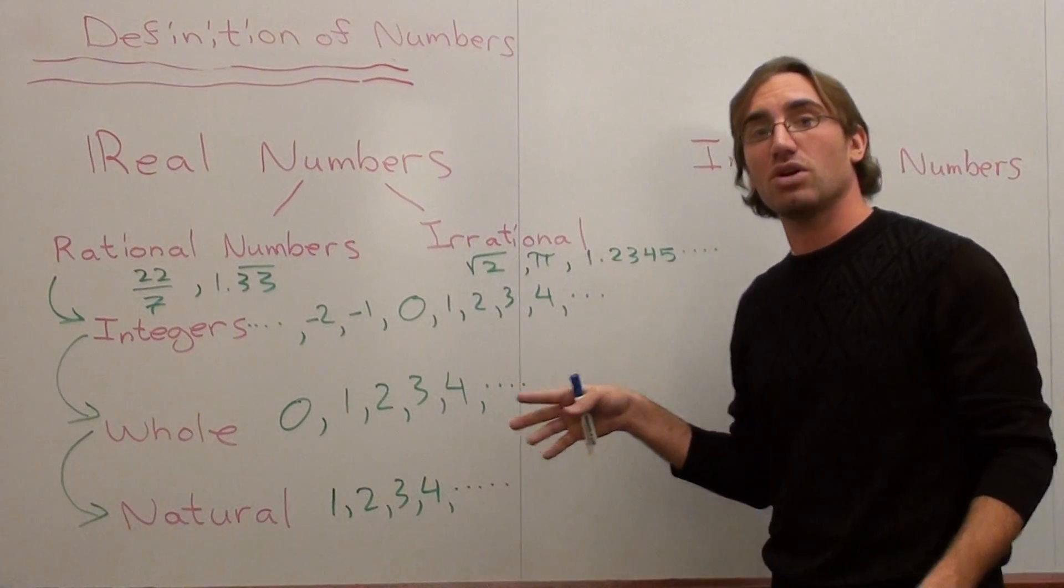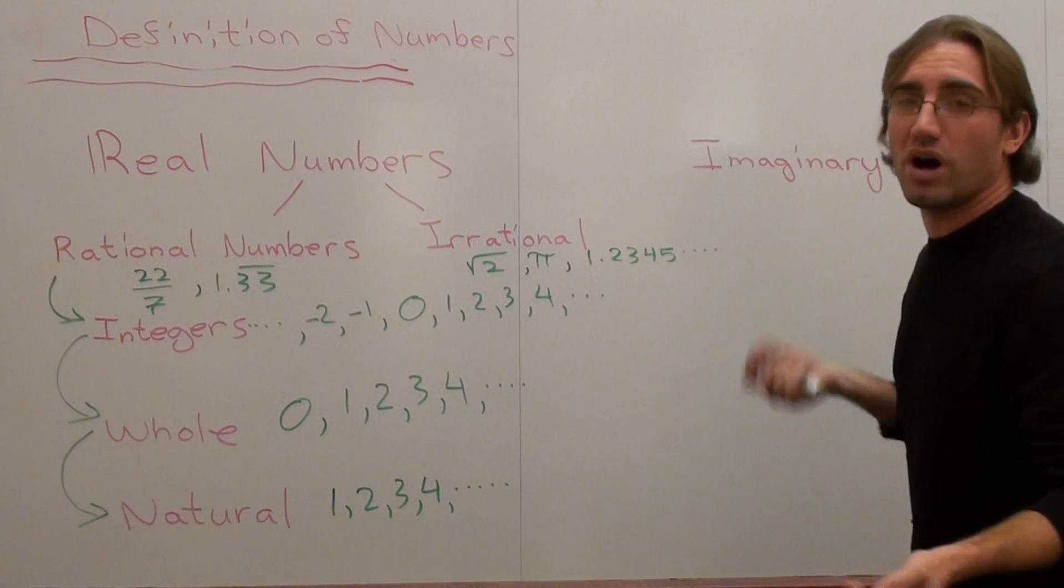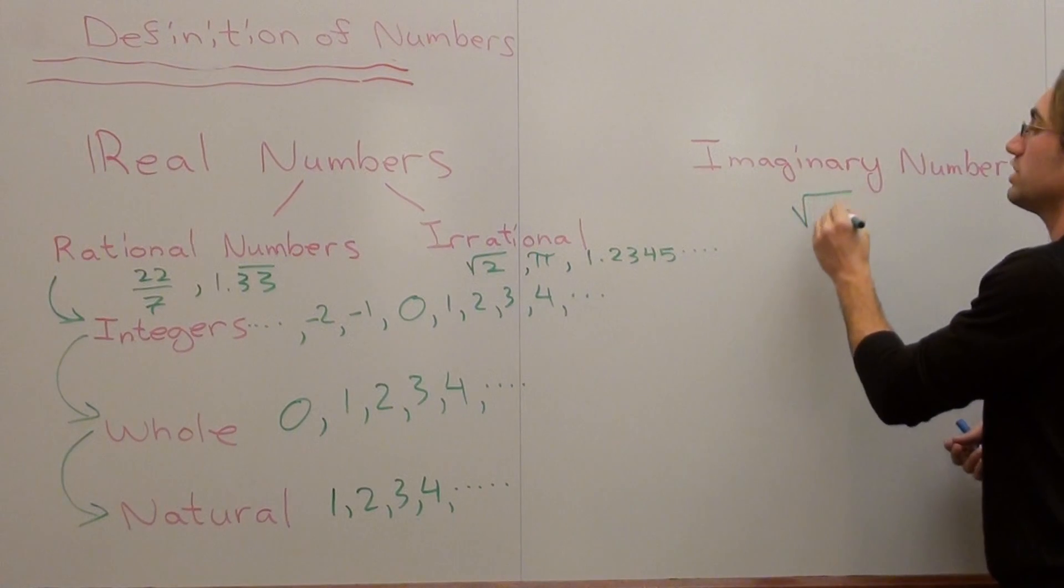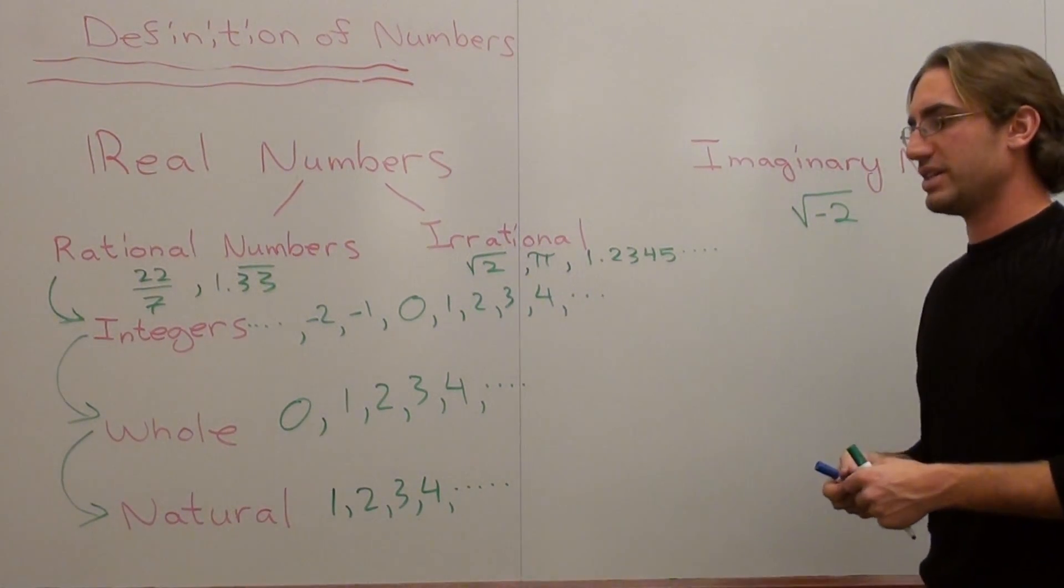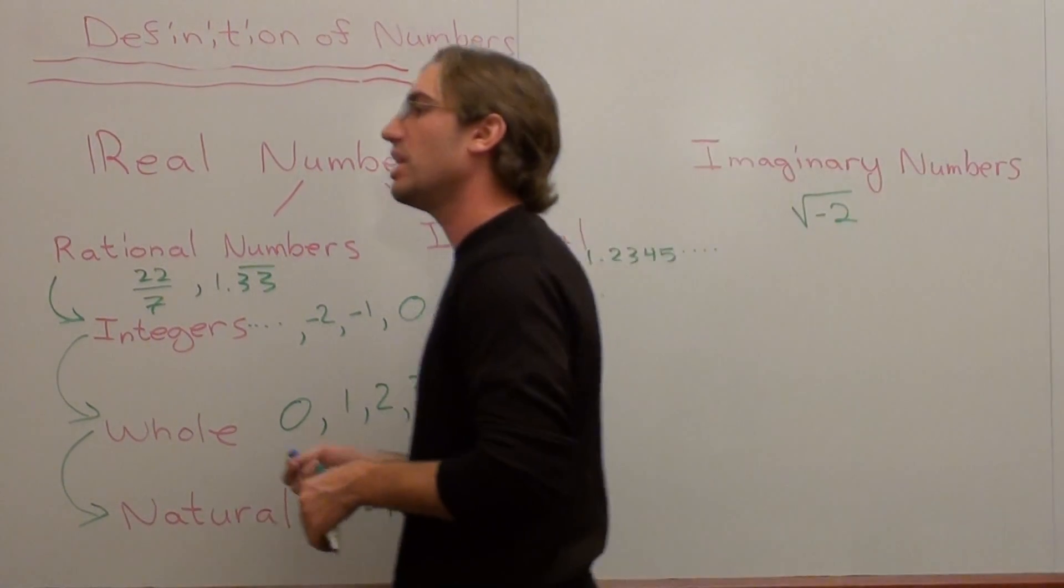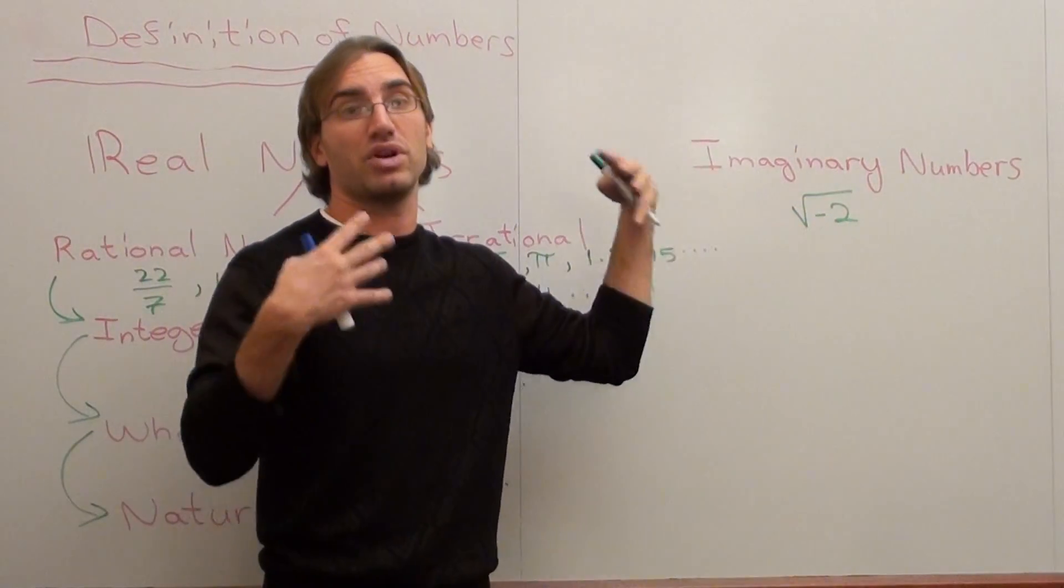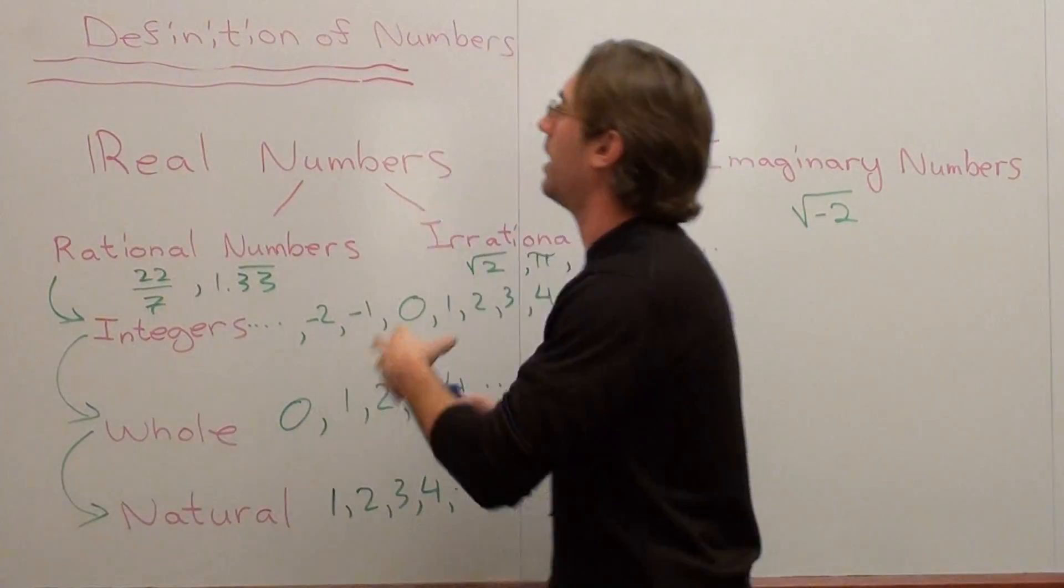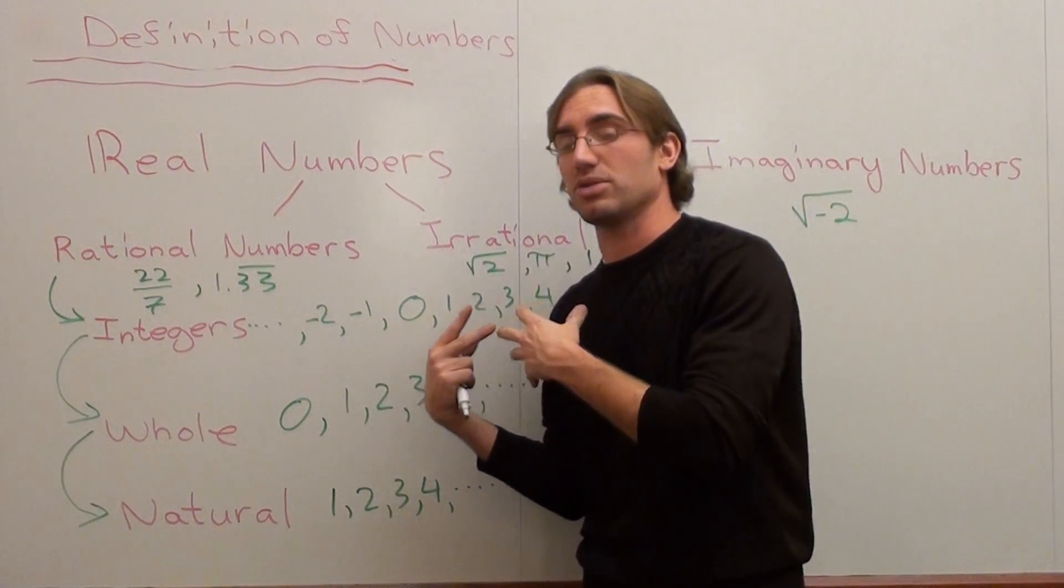Besides real numbers, there's actually something called imaginary numbers. And imaginary numbers you don't see too often. But we did do a little bit, very little. But the square root of a negative number would be an example of an imaginary number. Actually, the square root of a negative number, a fourth root of a negative number, sixth root. But maybe I'm getting a little too ambitious there. So I'll just say the square root of a negative number is an example of an imaginary number.